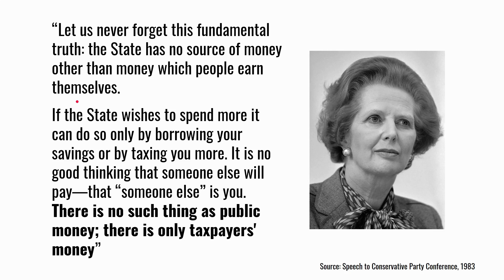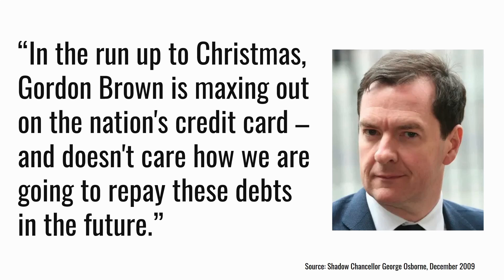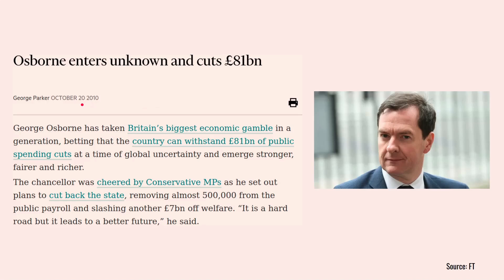Margaret Thatcher at the height of her power in 1983 said the state has no source of money other than the money which people earn themselves — there's no such thing as public money, only taxpayers' money. George Osborne in 2009 said Gordon Brown was maxing out the nation's credit card, and when he became chancellor in 2010 he launched a huge austerity program, cutting government expenditure with the belief that it would be a hard road but lead to a better future.